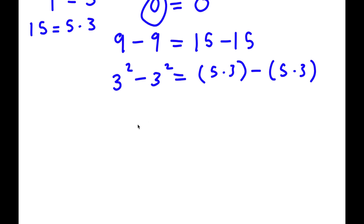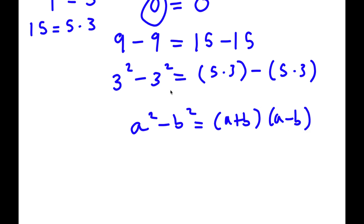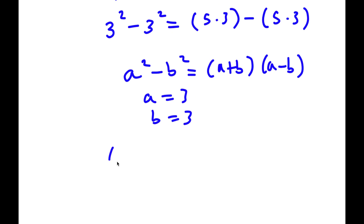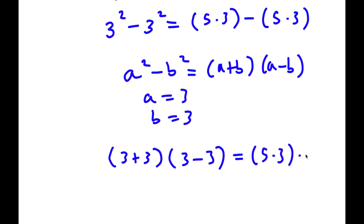If I have something in the form a squared minus b squared, this equals (a plus b) times (a minus b). In this case I have three squared minus three squared, where a and b are both three, so I get (three plus three) times (three minus three).